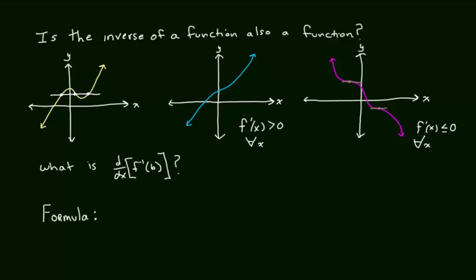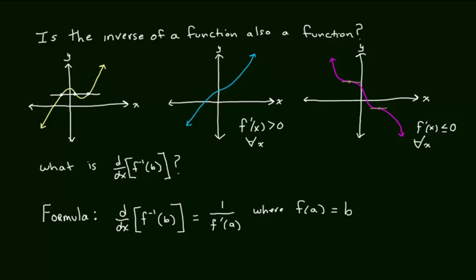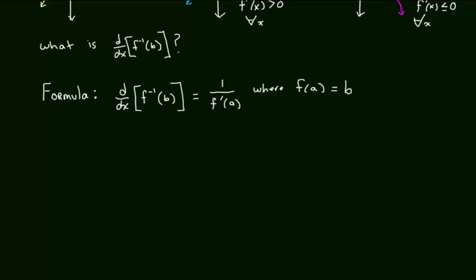Now let's take a look at a formula, which I will write as the derivative with respect to x of the function's inverse at a particular value. This tells us we're going to find the derivative of the function's inverse at some value b. As a formula, that's going to equal 1 over the regular function's derivative at some value a, where f of a is equal to b. That takes a minute to digest. In the beginning part of the lesson, I want to see if you can just utilize this formula, and then we will get into why the formula works.